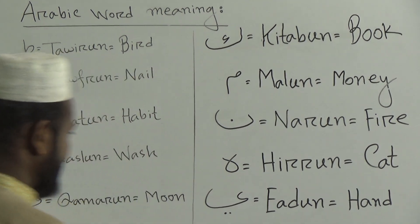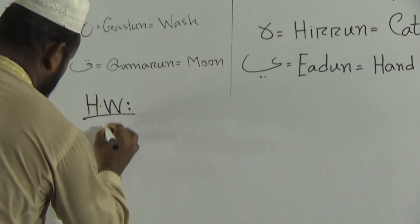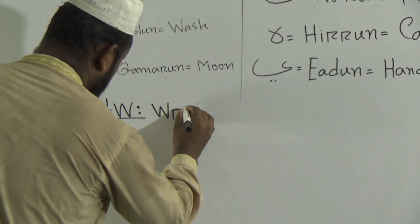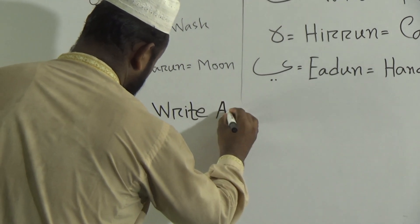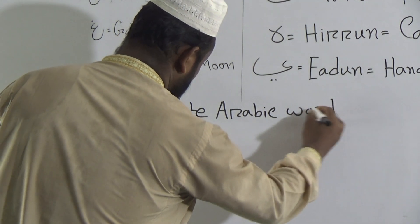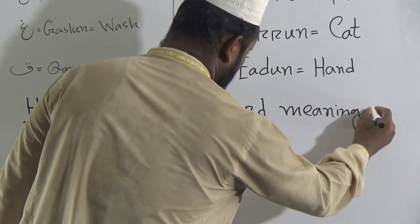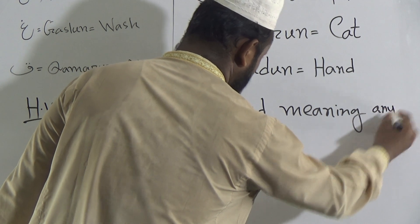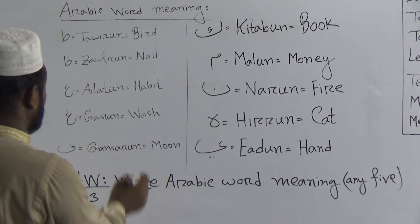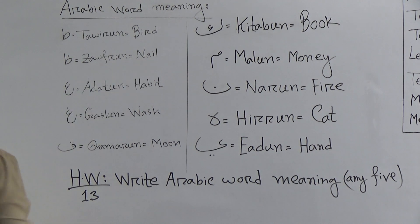Dear students, now I will give homework. Today's homework number 13: write Arabic word meanings — any five. For example, Taa for Thawrun — Thawrun means bull. Zaa for Zawfrun — Zawfrun means nail. Write any five like this.